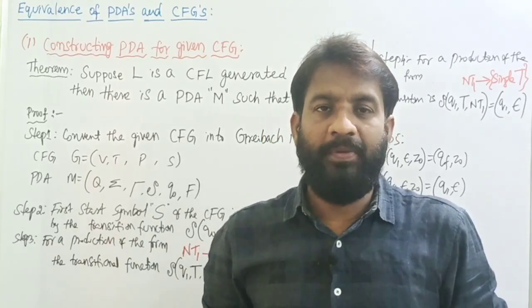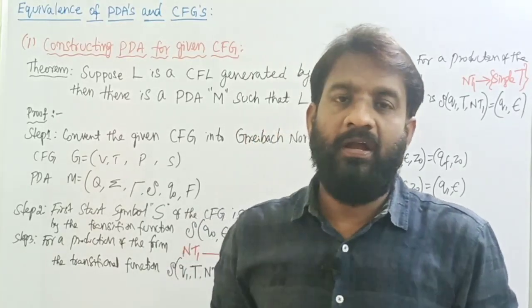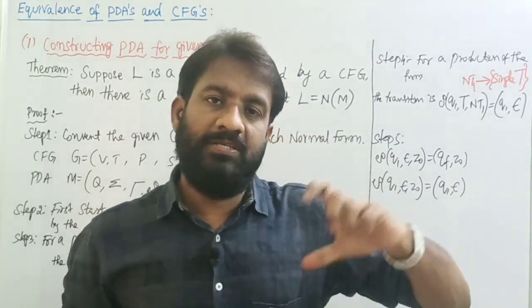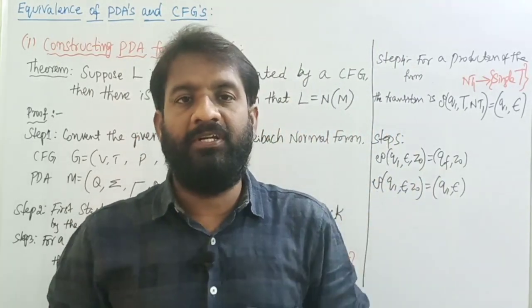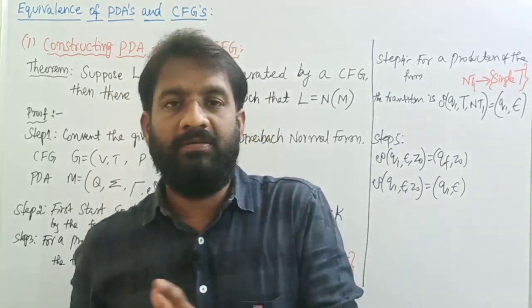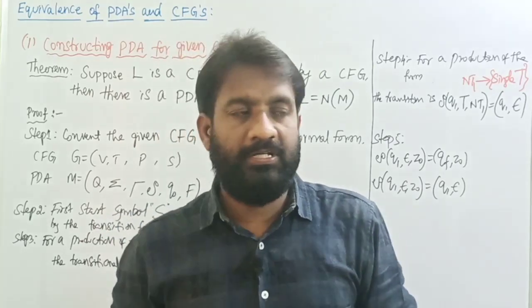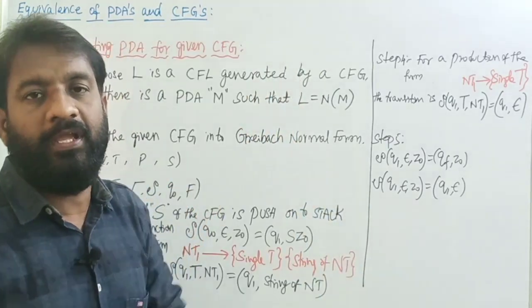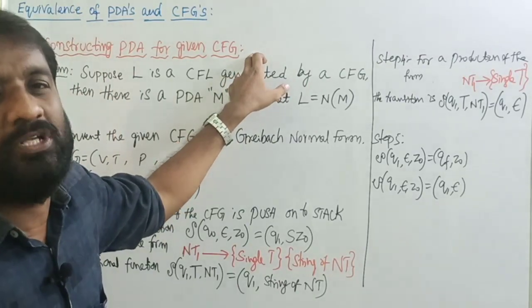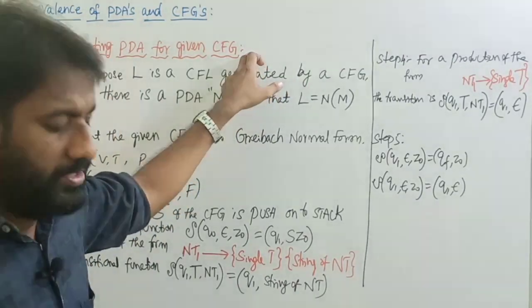Welcome back. Today's topic is the equivalence of PDA and context-free grammar. For every PDA there exists some context-free grammar, and for every context-free grammar there exists some PDA. This lecture will discuss how to convert a context-free grammar into a pushdown automata — that is, how to construct a pushdown automata from a given context-free grammar.